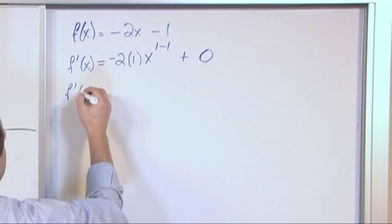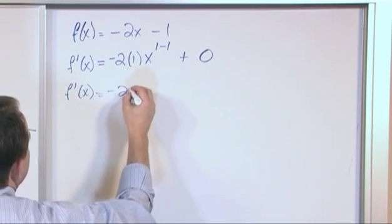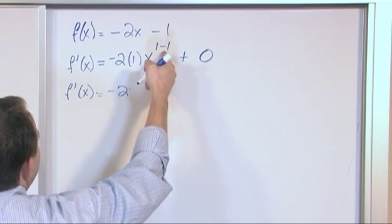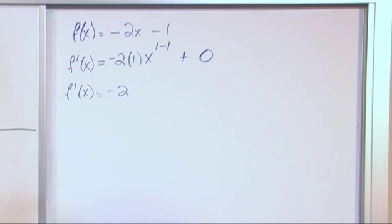So finally, the answer that we would write would be this guy, negative 2, and then we have x to the 0 power, which is just 1. So the answer is just simply going to be negative 2.